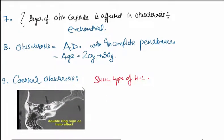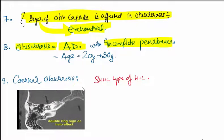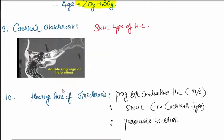What layer of otic capsule is affected in otosclerosis? The endochondral layer is affected. Otosclerosis is an autosomal dominant condition with incomplete penetrance, and age is between 20 to 30 years.